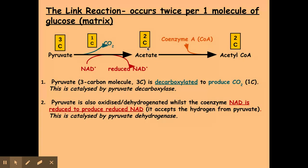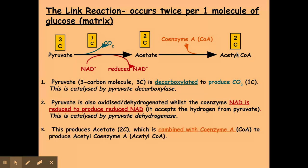Once I've got my acetate, which is a two-carbon compound, my acetate combines with coenzyme A to form acetyl coenzyme A. Coenzyme A is a coenzyme, and this coenzyme — along with NAD, which is another coenzyme involved in respiration — both act a bit like postmen, taking things from one place to another. In this reaction, the coenzyme is going to take my acetate into the next stage of respiration, drop it off, and then come back and be reused, carrying more acetate into the Krebs cycle, which is the next stage.